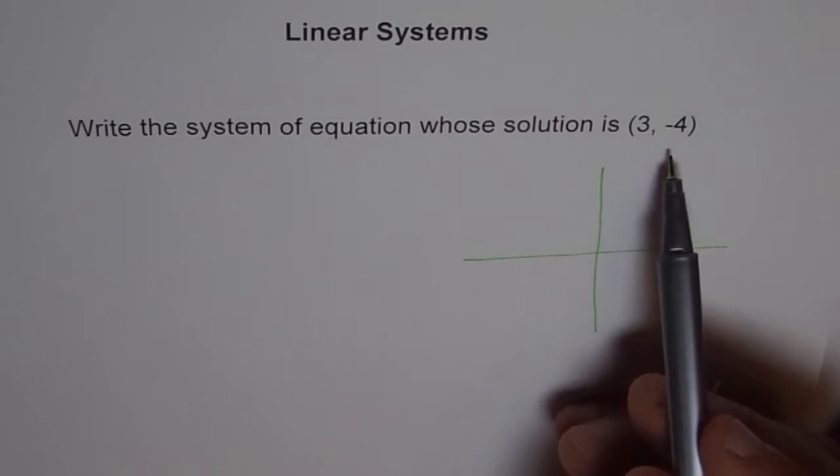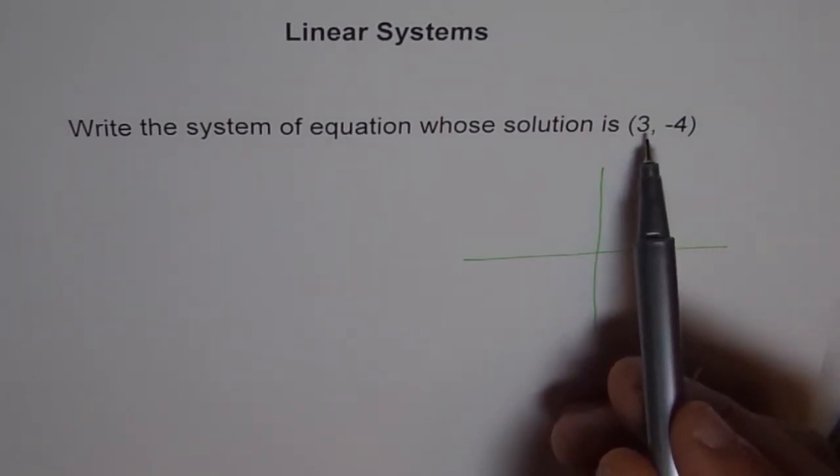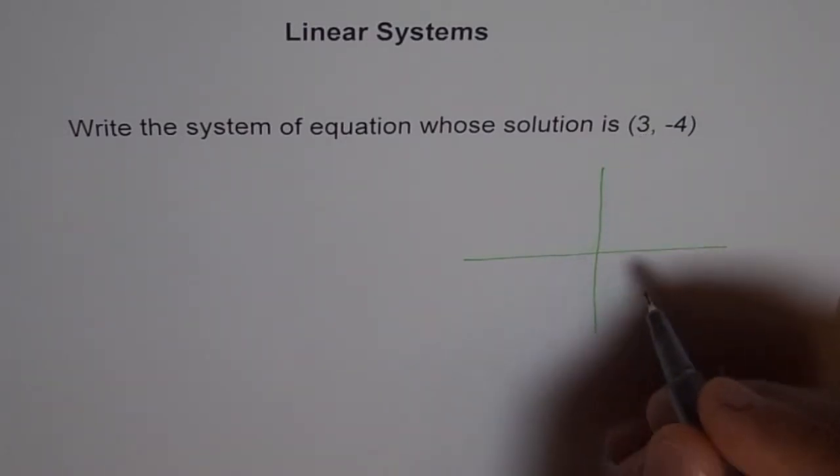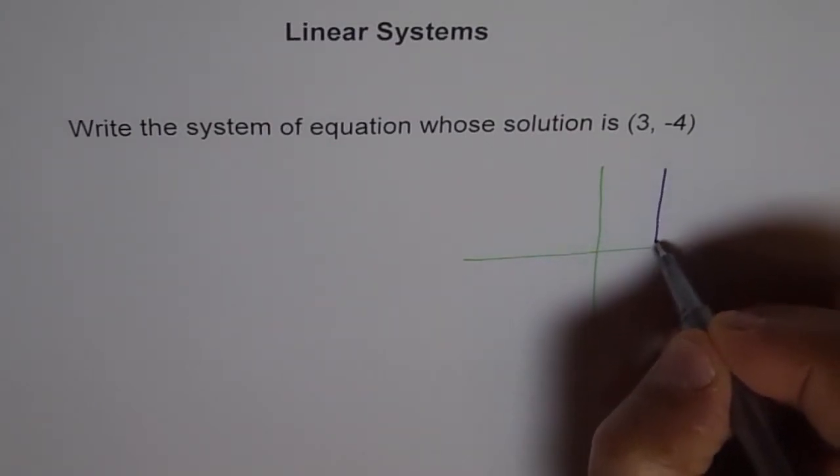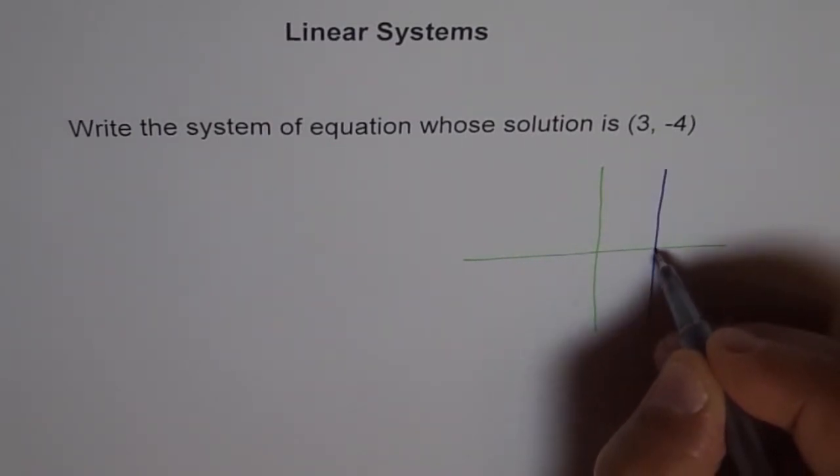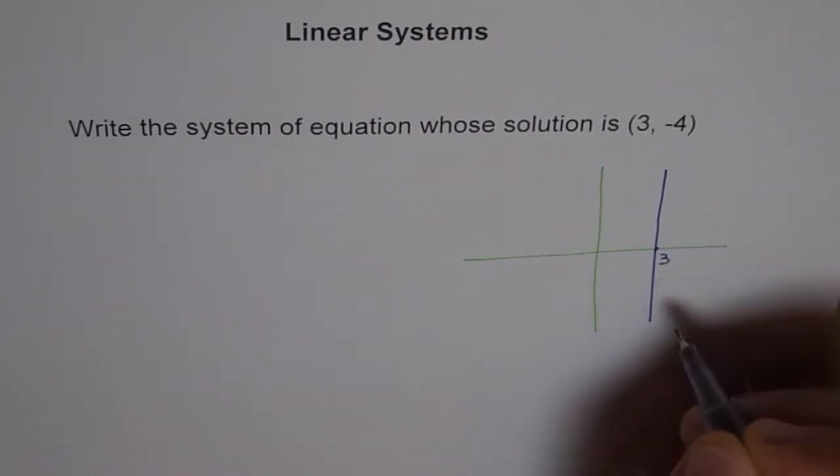So how can you draw a line whose equation is x equals 3? That means at every point it is 3. So it could be a vertical line like this. Where this point is 3. So if this point is 3, then my line is x equals 3.